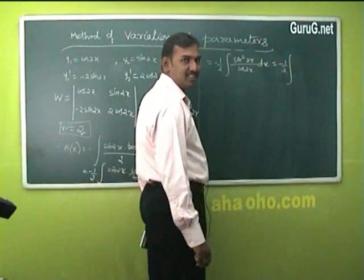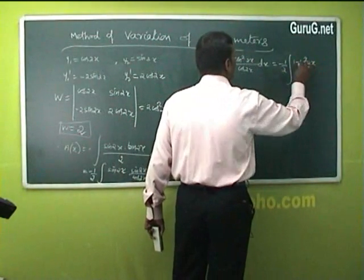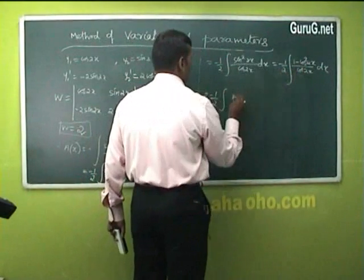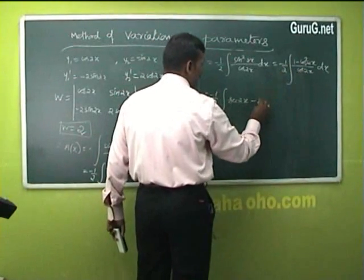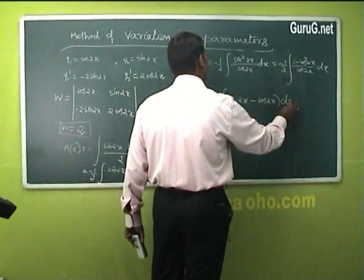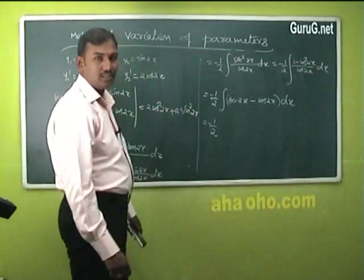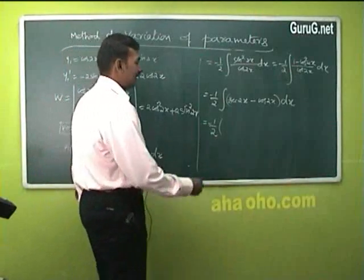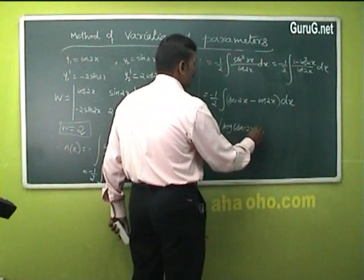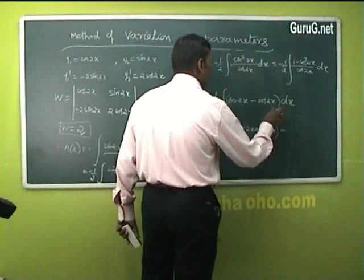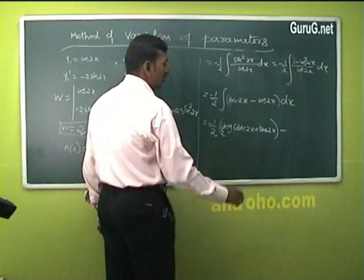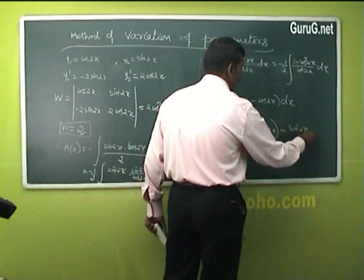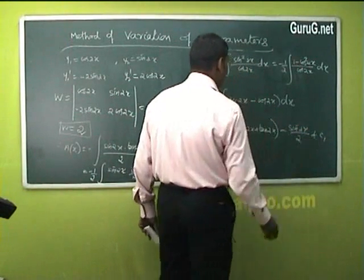Since sin²(2x) = 1 − cos²(2x), we write: −(1/2)∫(1 − cos²(2x))/cos(2x) dx = −(1/2)∫[sec(2x) − cos(2x)] dx. Integrating: −(1/2)·[(1/2)·log|sec(2x) + tan(2x)| − sin(2x)/2] + c₁. So a(x) = −(1/4)·log|sec(2x) + tan(2x)| + sin(2x)/4 + c₁.